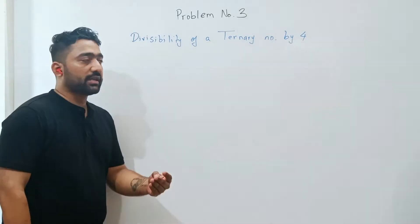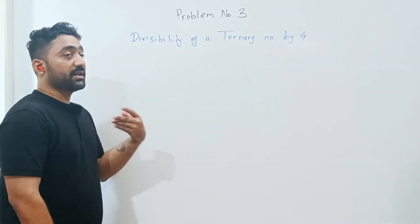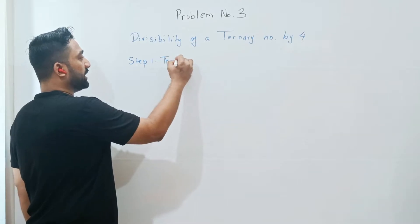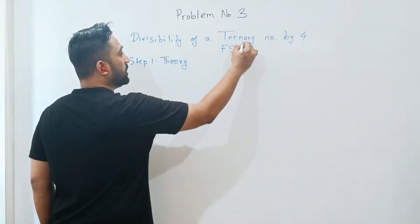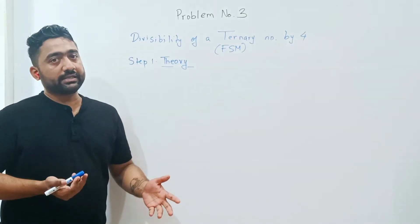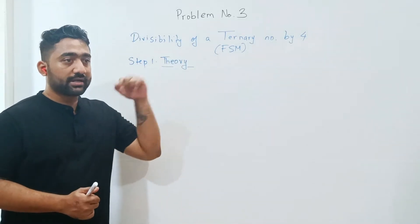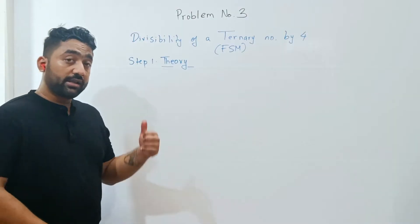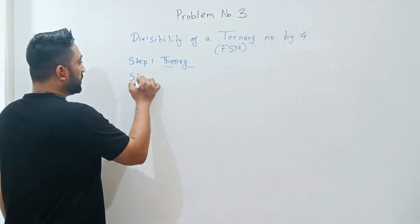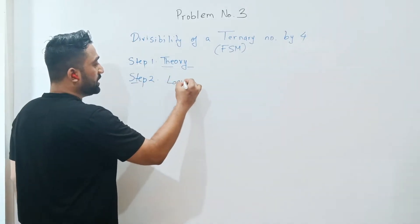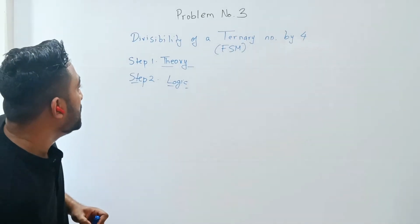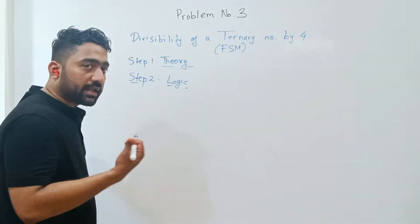In the previous two videos, you must have got the idea of how to create an FSM, which are the steps. So I won't repeat all the steps. Step number 1, you know. Logic is that part which makes or breaks a particular question. So now we have the question: divisibility of a ternary number by 4. First of all, let's discuss what exactly are ternary numbers.